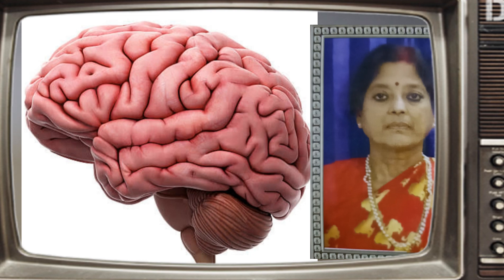Qualitative memory — declarative memory depends on our consciousness. It includes semantic and episodic memory. Semantic includes the memory of names, while episodic includes the memory of events such as a marriage.